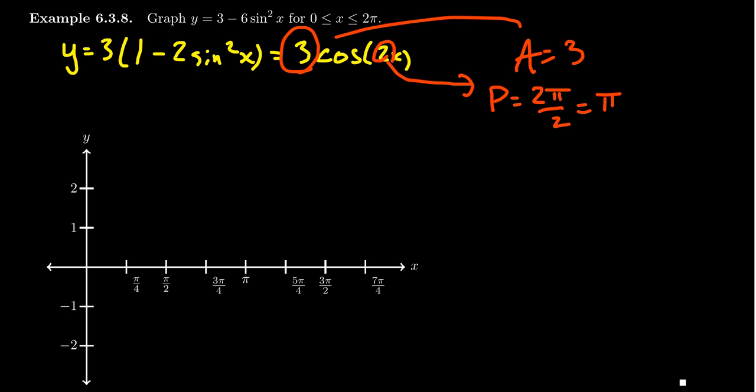So we're actually going to graph two cycles of this thing. One cycle would be from 0 to π, the other cycle would be from π to 2π. And since the amplitude is 3, we have to graph all the way up to 3 and all the way down to negative 3. So let's get started here.